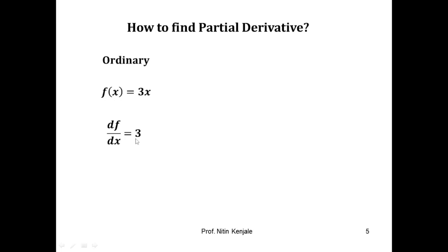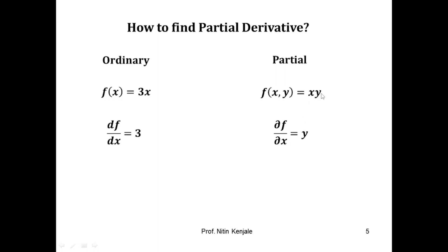Now coming on to partial derivatives — note that if we perform the partial derivative of f with respect to one of its variables, say x, then we have to keep the other variables involved in f as constants. For example, if f is a function of x and y defined as x times y, then ∂f/∂x is equal to y, because we treat y as constant and differentiate x alone.